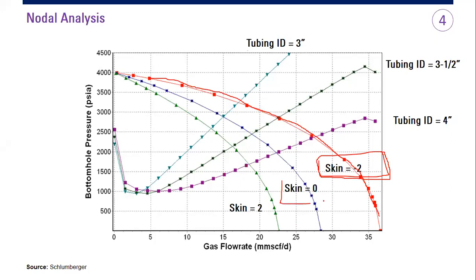Skin zero, base case, and skin two, formation damage case. So you have three inflows, and you can also do sensitivity for tubing size. You try three sizes. The first one, three inches, and then three and a half inches, and four inches. Of course, four inches will give you higher flow rate.